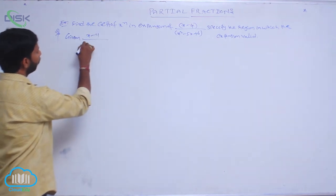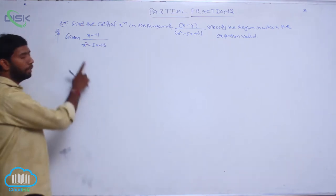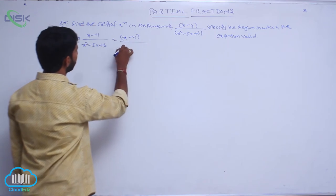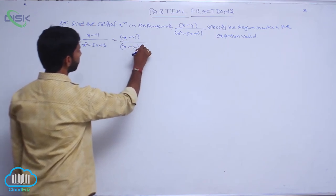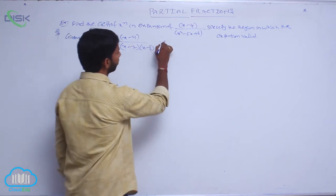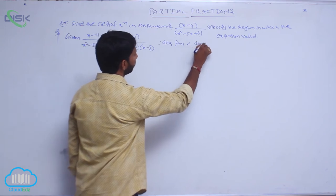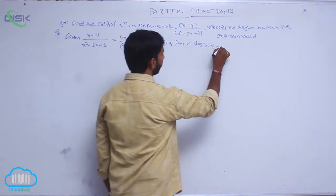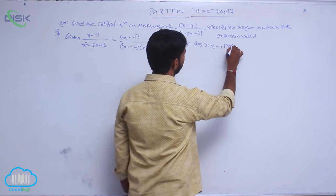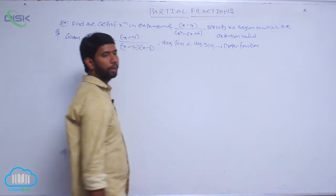Given (x minus 4) by (x squared minus 5x plus 6). First, split the denominator into factors: (x minus 4) by (x minus 2) into (x minus 3). Here the degree of the numerator f(x) is less than the degree of the denominator g(x), which implies it represents a proper fraction.